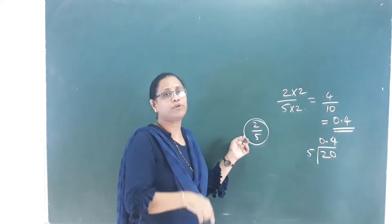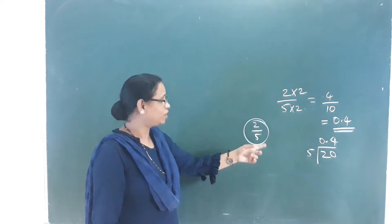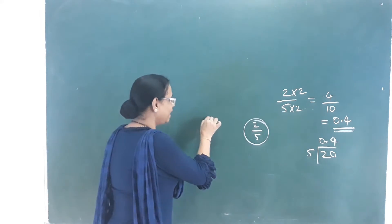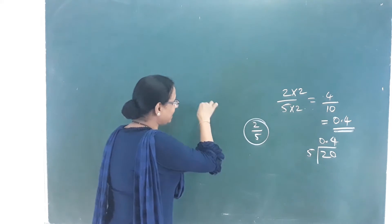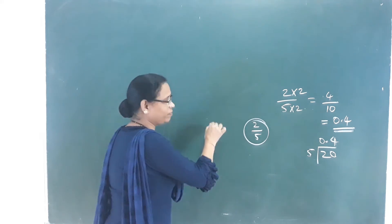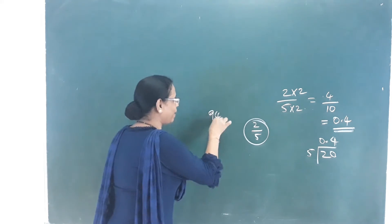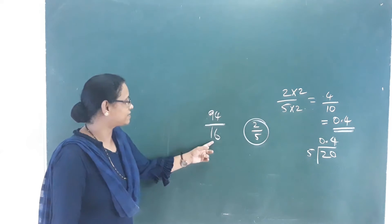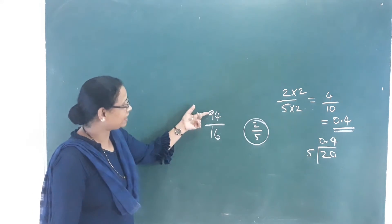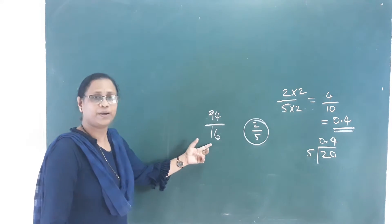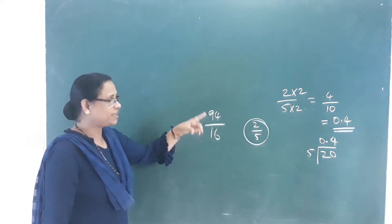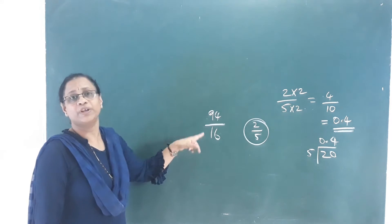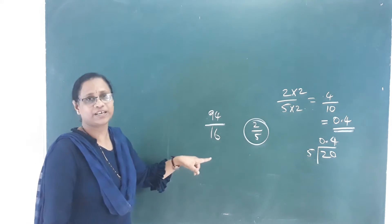You can also use improper fractions. For example, the value 94 by 16. Here the numerator is a larger number. What is the name of this? Improper fraction.